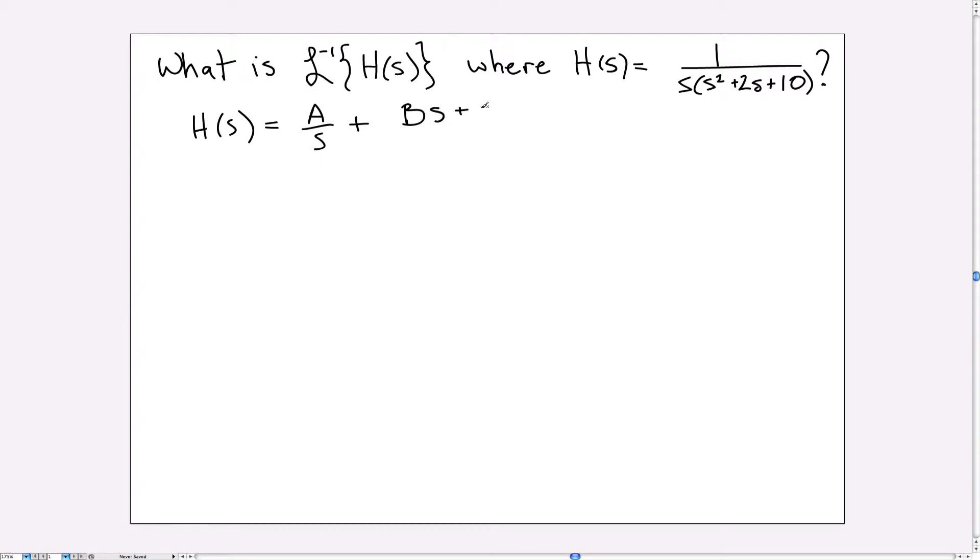So we add a second fraction that is BS plus C all divided by S² plus 2S plus 10. So we know that we should be able to, as long as we've got the form of this right, figure out a value of A, B, and C so that this sum of fractions is equal to the one we started with.